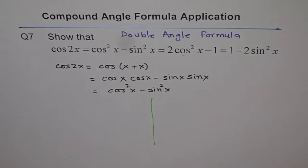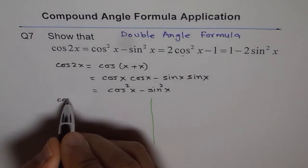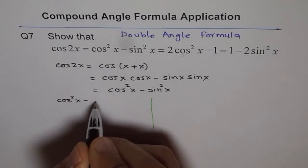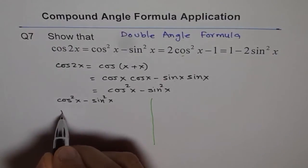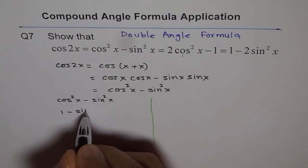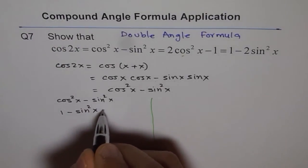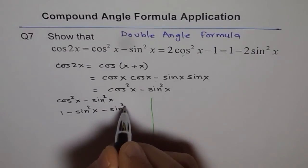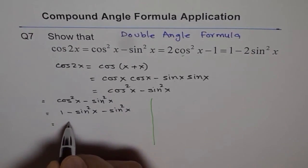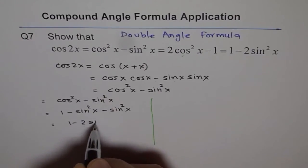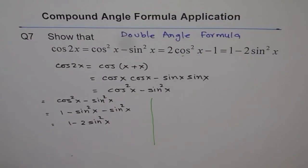Starting from here, we have cos square x minus sin square x. Now I can write cos square x as 1 minus sin square x. And this is minus sin square x. And that gives me 1 minus 2 sin square x. That is this one.